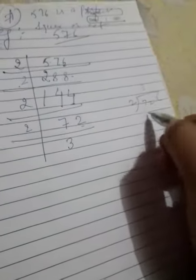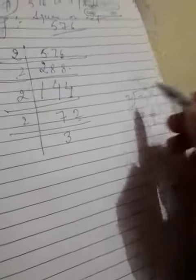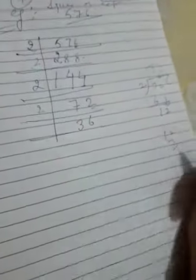Next, it is again divisible by 2. 2 times 3 is 6. Divide 72 by 2. 2 times 3 is 6, 1, 2. 2 times 6 is 12. Answer is 36.